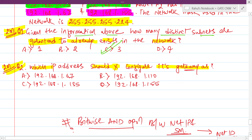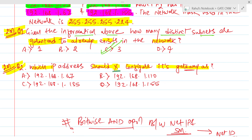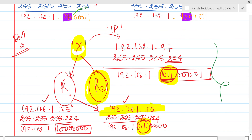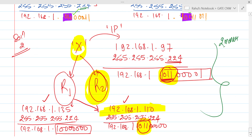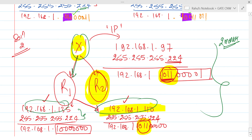For question 2, which IP address should HostX configure its gateway as? The answer is option B: 192.168.1.110. The reason is that R1's IP address 192.168.1.110 gives the same subnet bit pattern 011 as HostX. So HostX configures its gateway to 192.168.1.110. Total marks: 2 plus 2 equals 4 marks from this gateway problem. The network ID that matches is what determines the gateway.